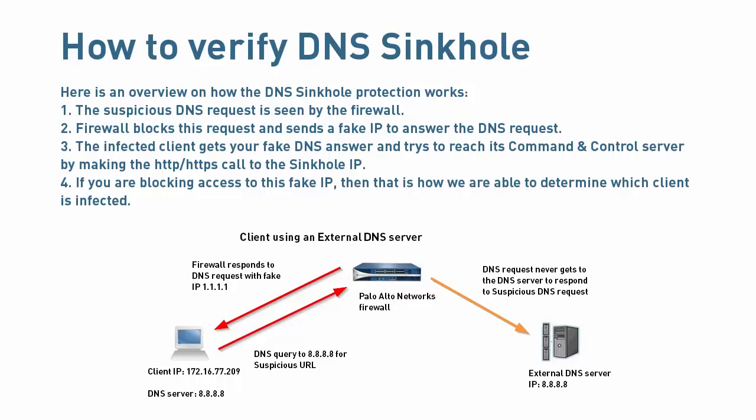Number four, if you're blocking the access to this fake IP, then that's how we're able to determine which client is infected. Please note, the Palo Alto Networks firewall must be in the path of the DNS request to a suspicious URL, and also needs to be in the same path that the infected machine tries to access the DNS sinkhole IP to reach the command and control server.